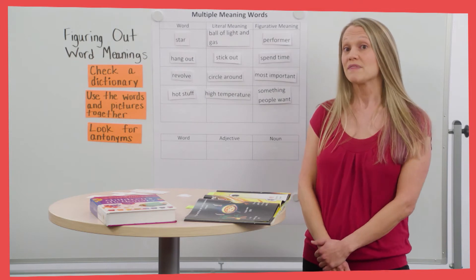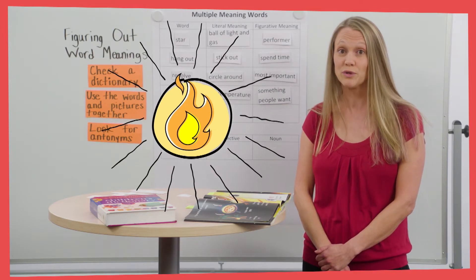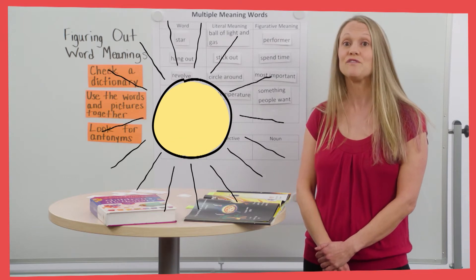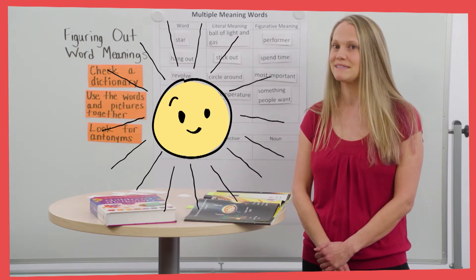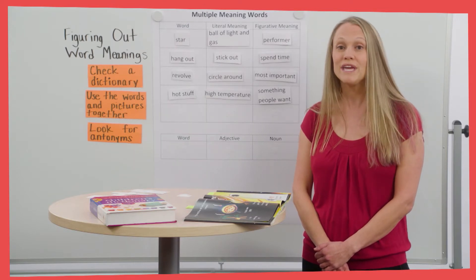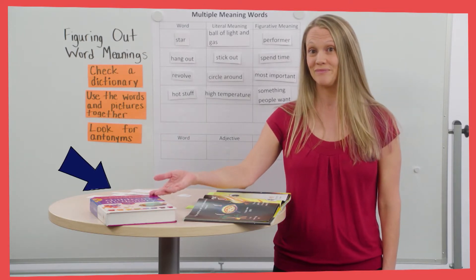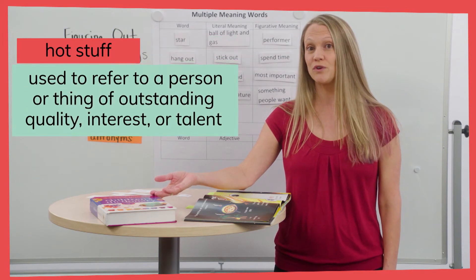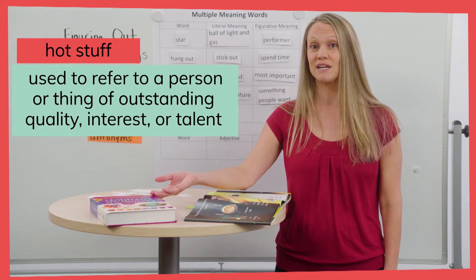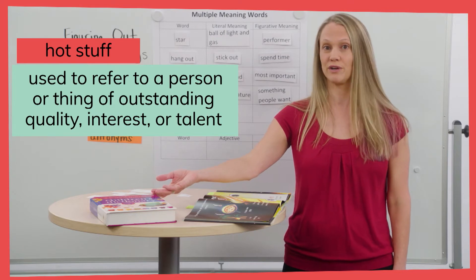So the sun is literally made out of hot stuff with a very high temperature that can burn you. And the sun is figuratively hot stuff in this book because it's so loved, adored, and celebrated. We can confirm this by checking a dictionary. When I look up hot stuff, it says: used to refer to a person or thing of outstanding quality, interest, or talent. So that matches what we figured out from the text.